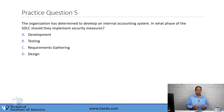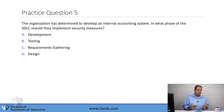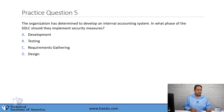Question number five: The organization has determined to develop an internal accounting system. In what phase of the SDLC should they implement security measures? A, development. B, testing. C, requirements gathering. D, design.